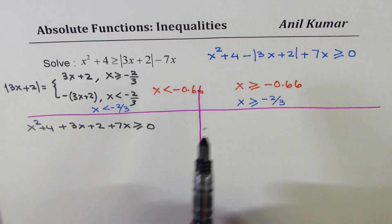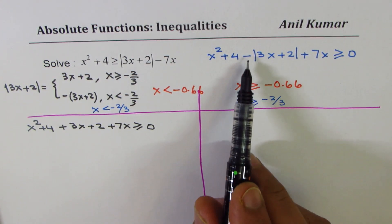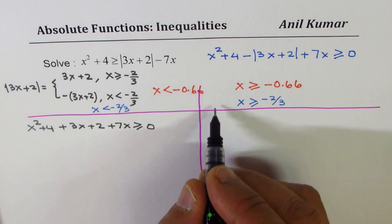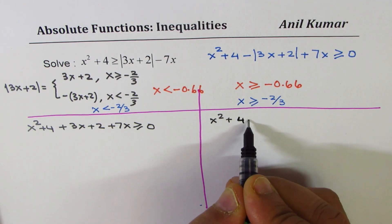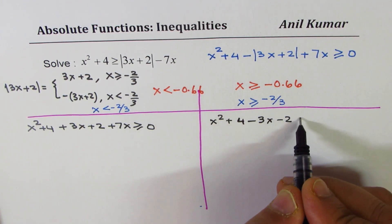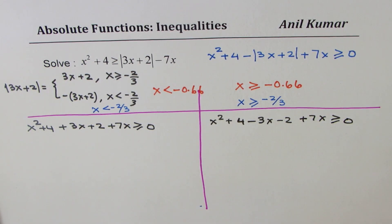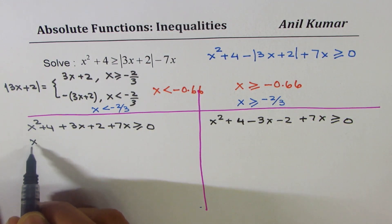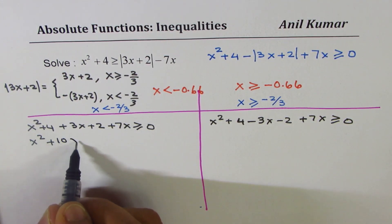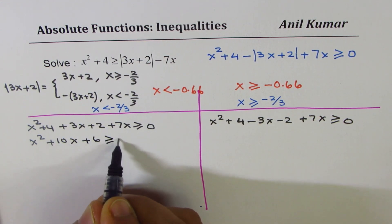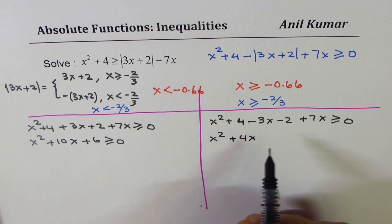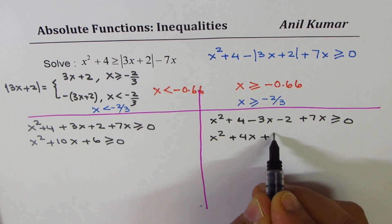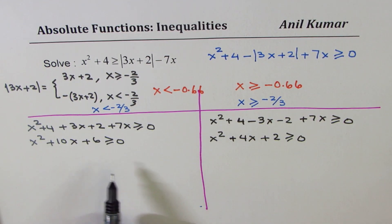When x is greater than or equal to −2/3, we use the positive branch, so the inequality becomes x² + 4 − 3x − 2 + 7x ≥ 0. Simplifying the first case gives x² + 10x + 6 ≥ 0, and simplifying the second case gives x² + 4x + 2 ≥ 0.